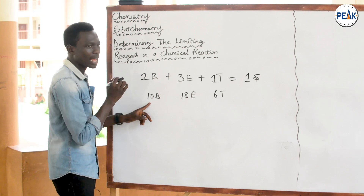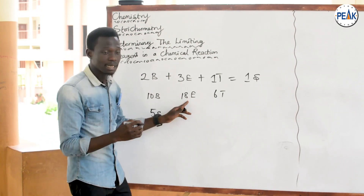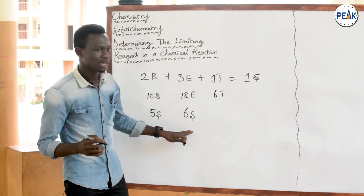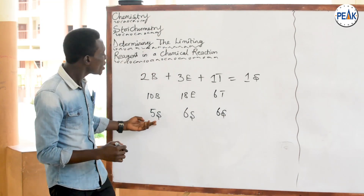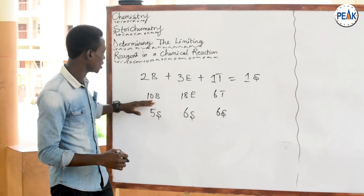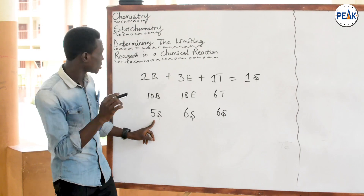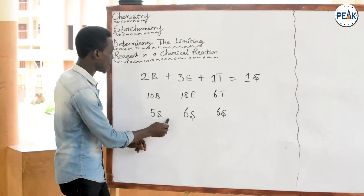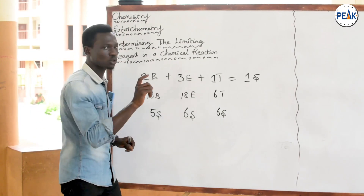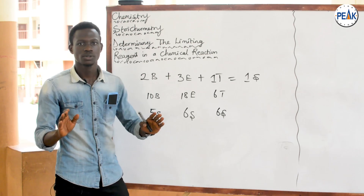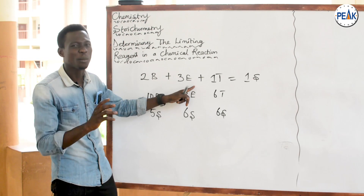Since two loaves of bread, three eggs, and one tomato give one sandwich: 10 loaves of bread can give 5 sandwiches, 18 eggs can give 6 sandwiches, and 6 tomatoes can give 6 sandwiches. So how many sandwiches can I actually get? Obviously just 5, because the bread has been used up completely. Once any reagent is used up, the reaction stops and no more product is formed.